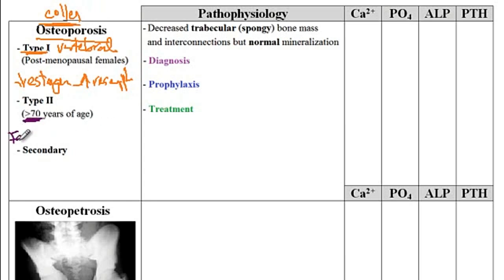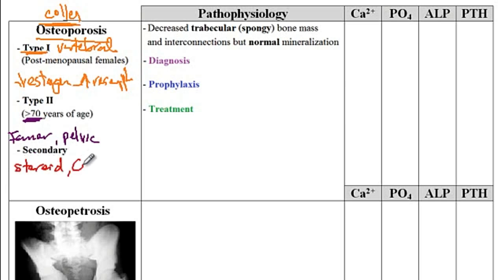In senile osteoporosis, femur as well as pelvic fractures are particularly common. The third type is secondary osteoporosis, which results from chronic steroid use, conditions like Cushing's disease where there are increased corticosteroids, long-term heparin use, vitamin D deficiency, immobilization, and other causes that lead to osteoporosis.